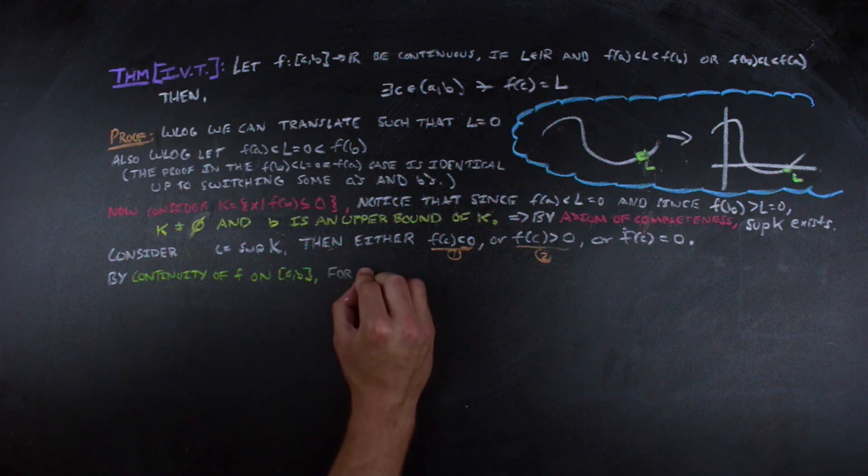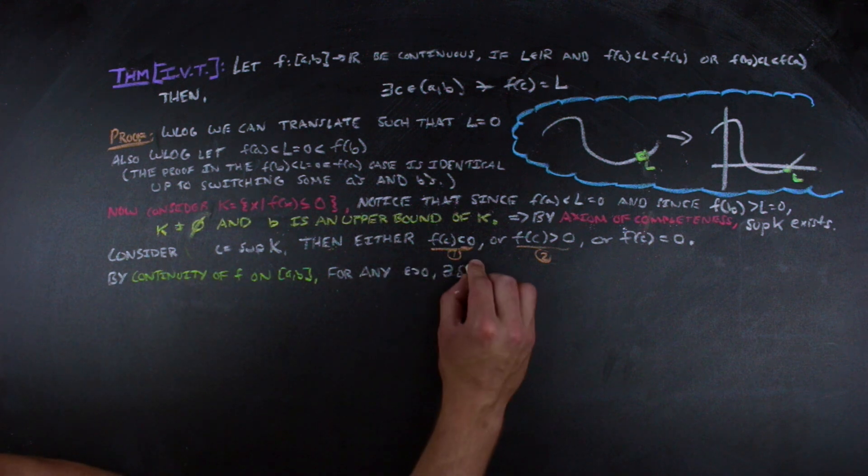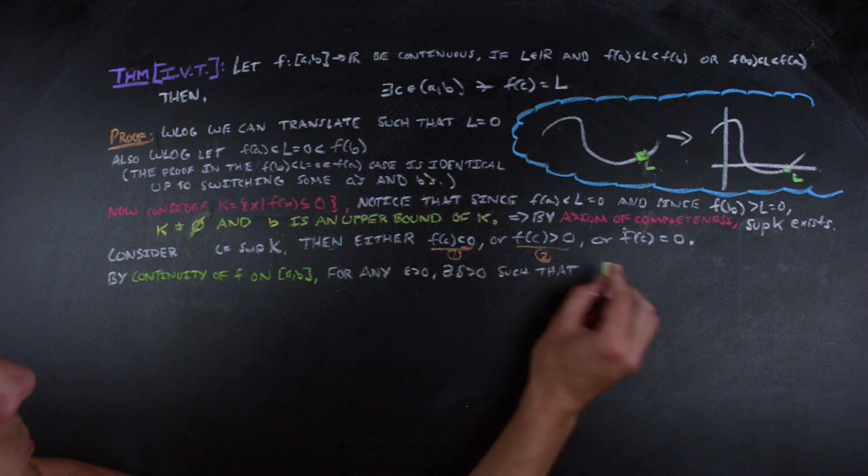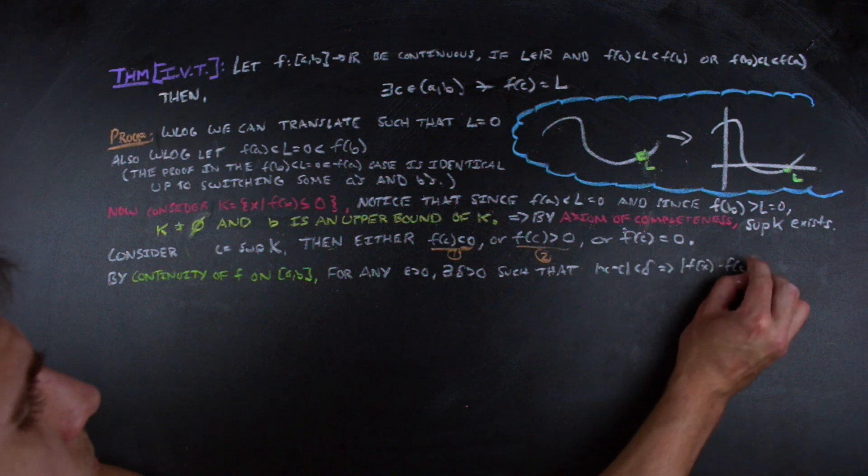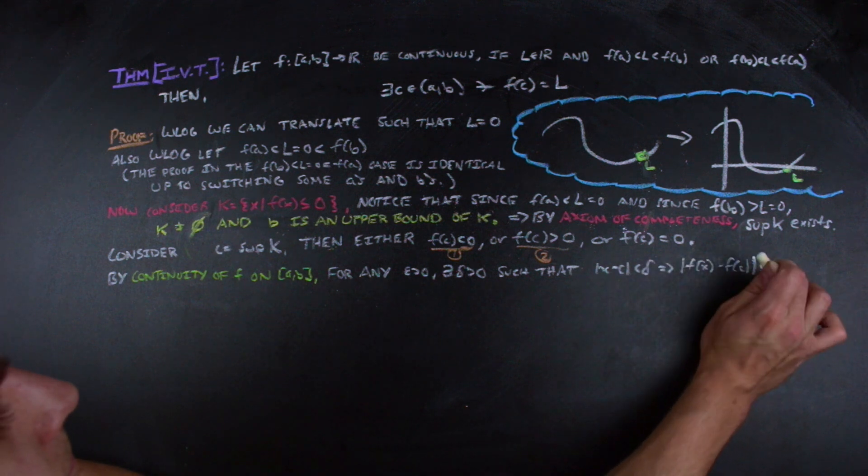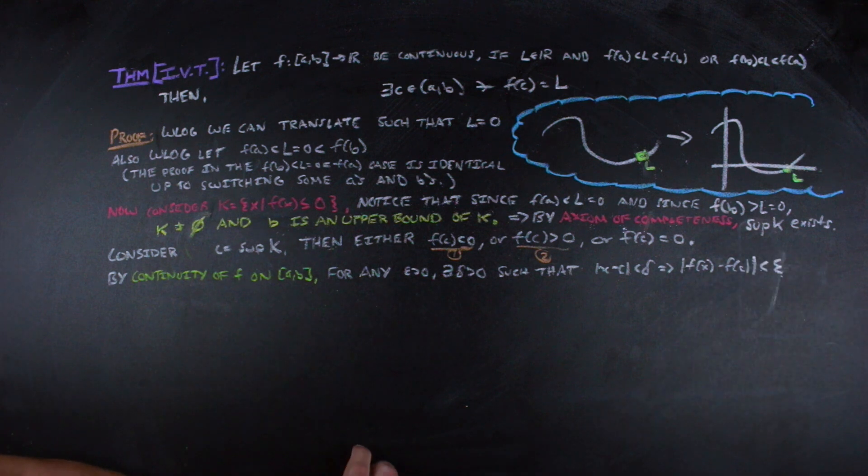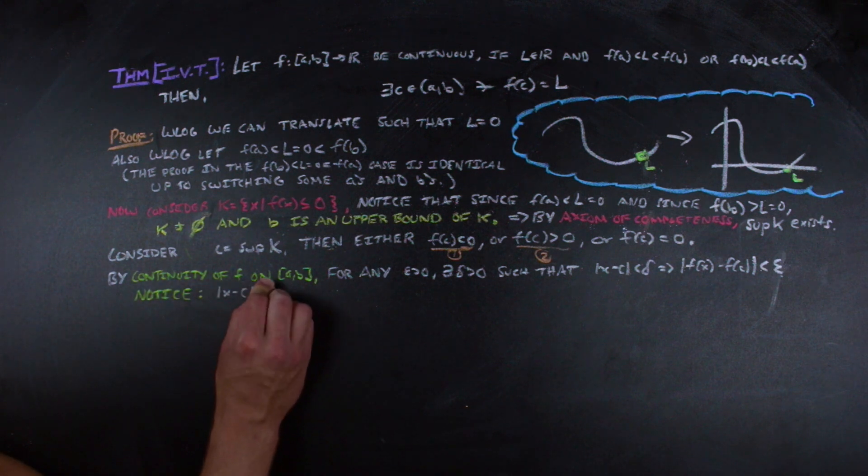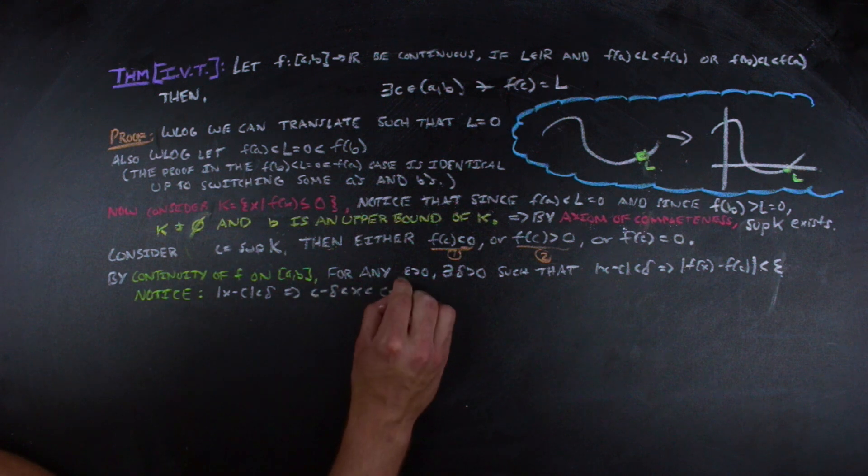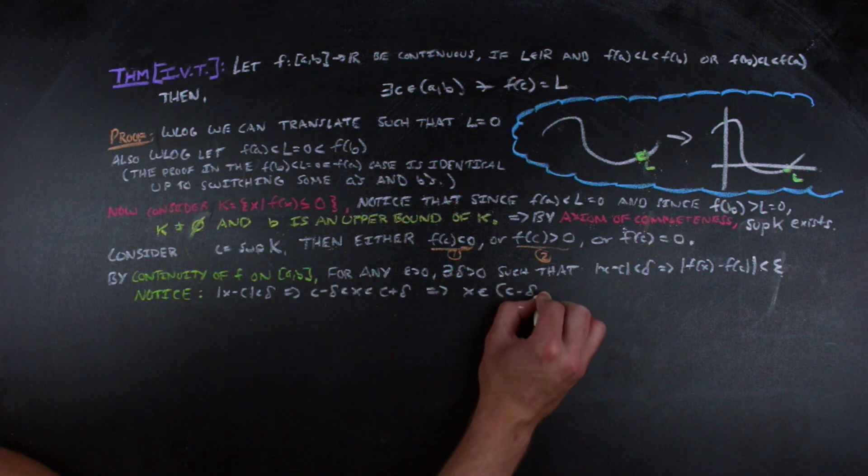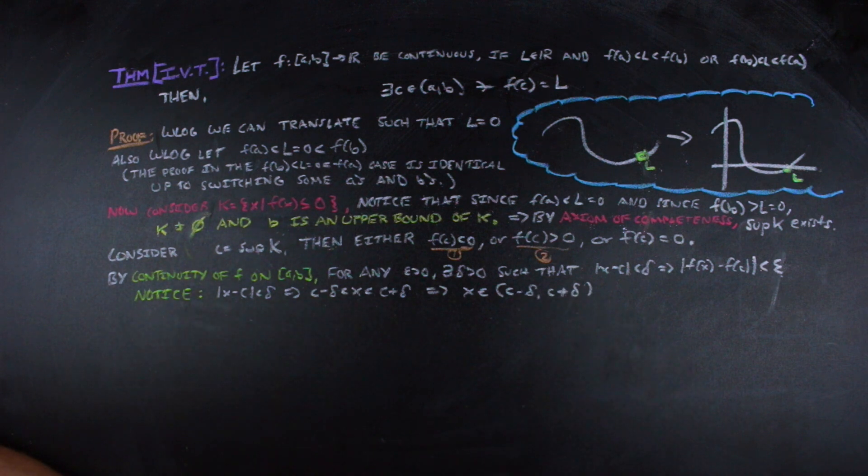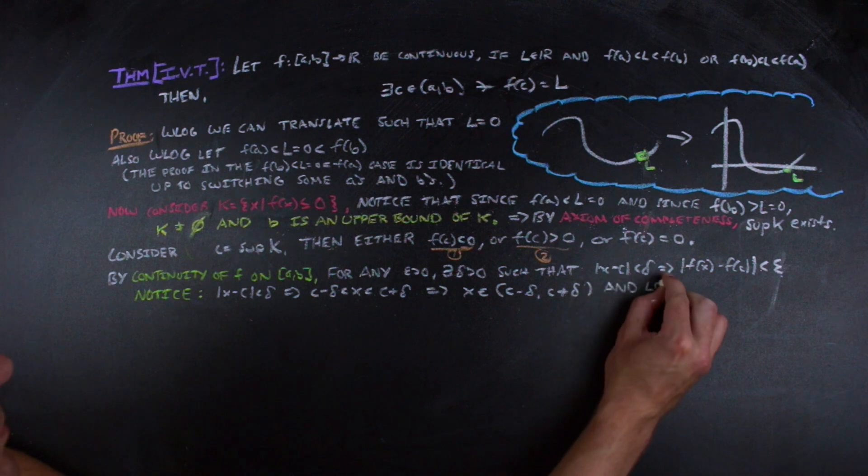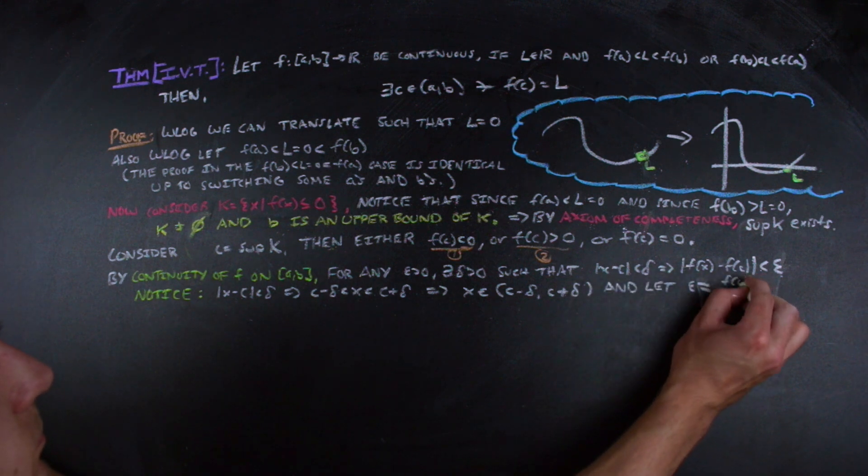So since f is continuous on its domain, for all epsilon greater than 0, there exists a delta greater than 0 such that when the absolute value of the difference between x and c is less than delta, the absolute value of the difference of the images of x and c is less than epsilon. Notice that the inequality between x and c gives us that x is contained in the interval between c minus delta and c plus delta. Also note that for any epsilon, we can find such a delta. So if we choose an epsilon, we know that there exists such a delta.